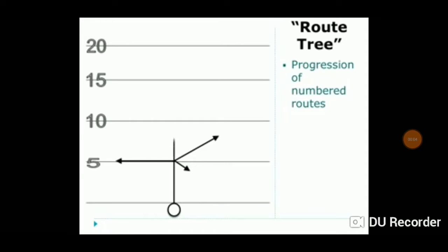A route tree is a progression of numbered routes that a wide receiver can run. When all possible routes are graphed from a single starting point, it kind of looks like a tree.